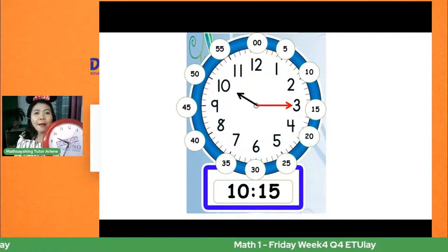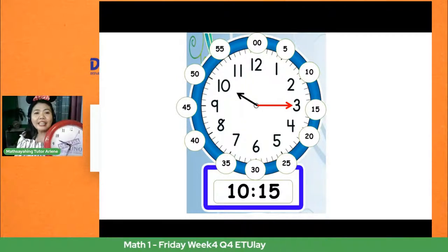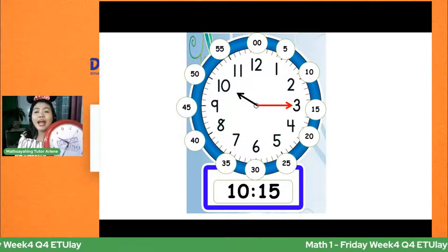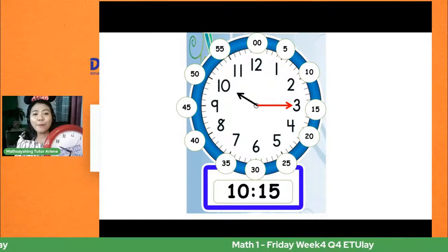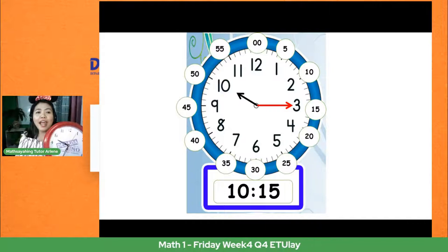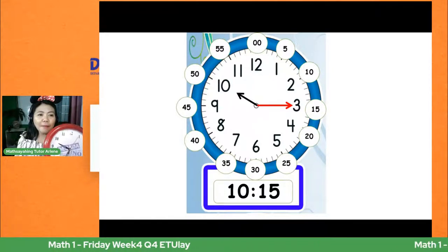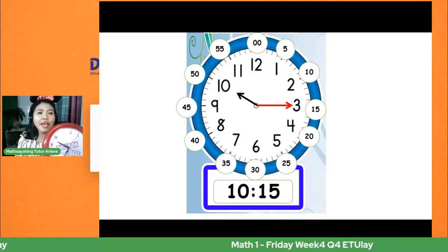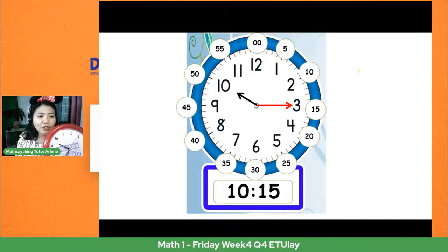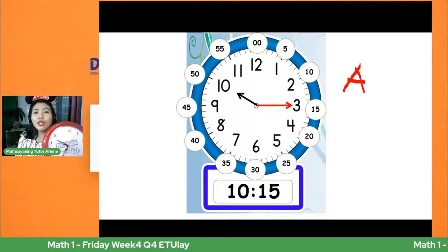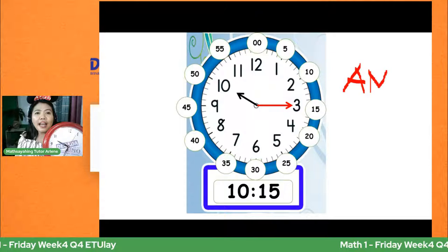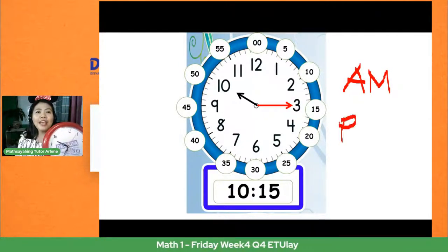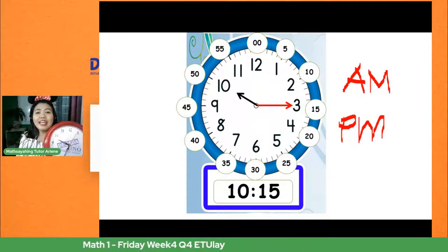Ito ang ating mga minuto. Dahil nakatapad siya sa number 3, tatawagin natin itong 15 — labing limang minuto makalipas ang ikasampung oras. Meron tayong AM at saka PM. Yung AM, yun ang umaga. At ang PM naman, yan ang ating hapon.